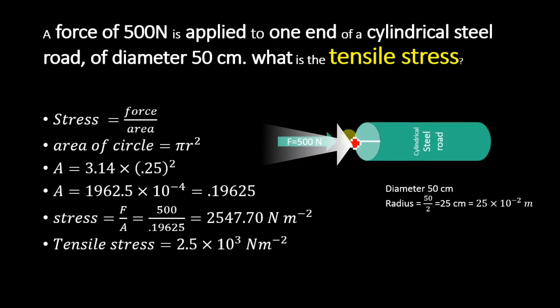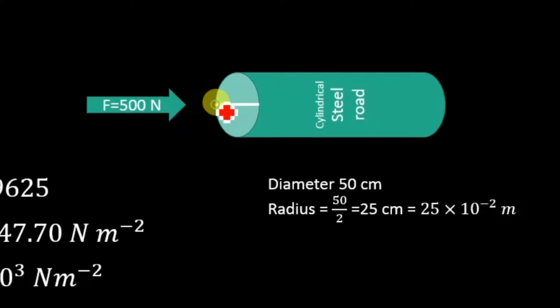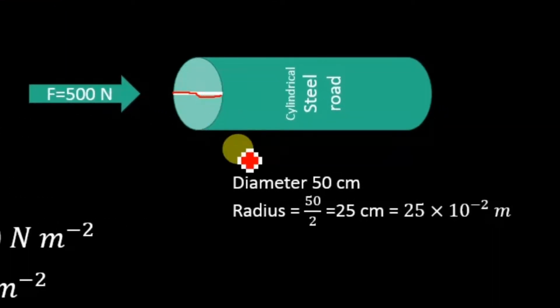The diameter of this rod is given as 50 centimeter. Converting this diameter to radius, we will get 50 divided by 2 which is equal to 25 centimeter. And we know that 25 centimeter in SI unit, or in meters, is 25 × 10^-2 meter.